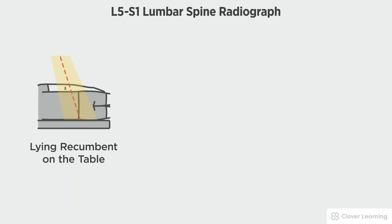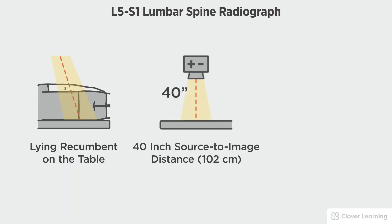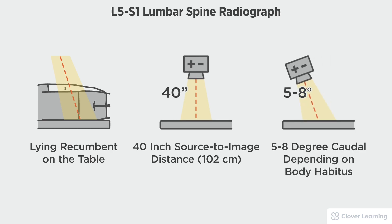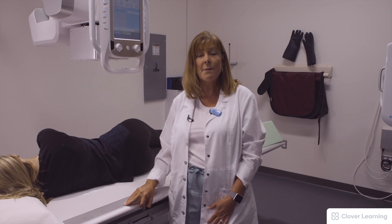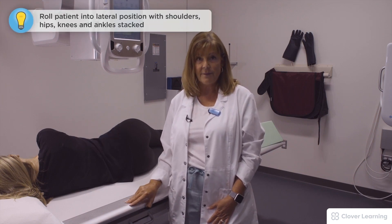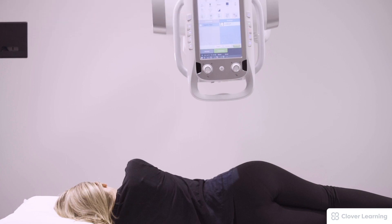In this view we will be demonstrating the lateral L5-S1 of the lumbar spine. The L5-S1 view should be performed with the patient lying on the table with a 40 inch source to image distance and a 5 to 8 degree caudal tube angulation depending on sex or body habitus. This is a spot film of L5-S1, the lower lumbar and first sacral area.